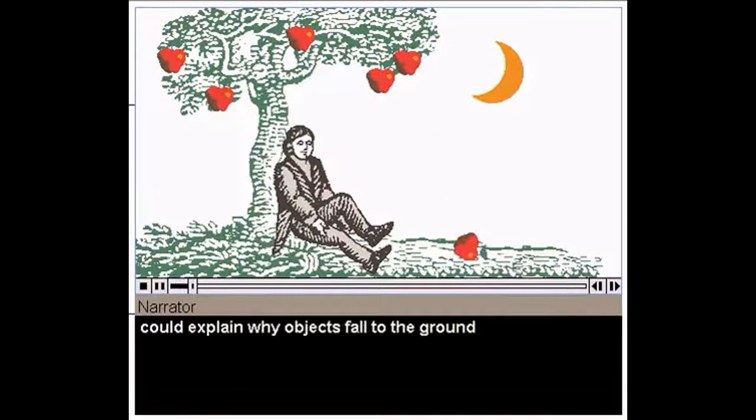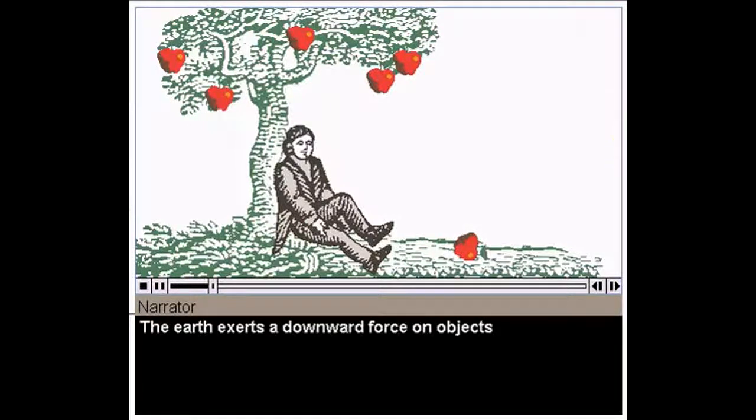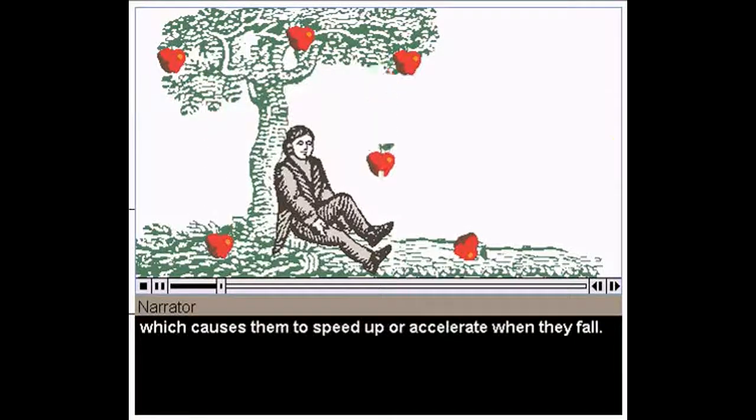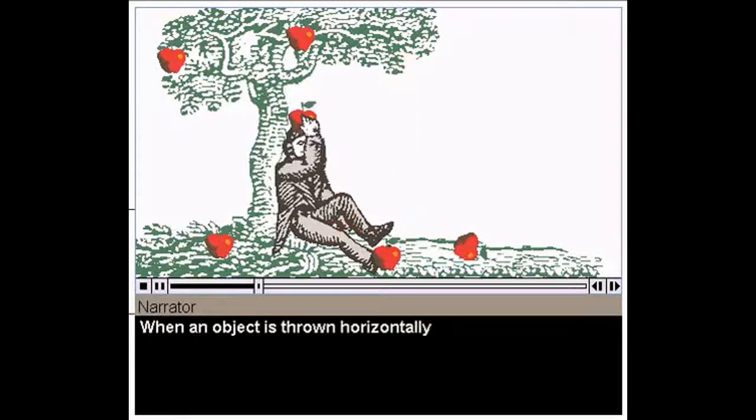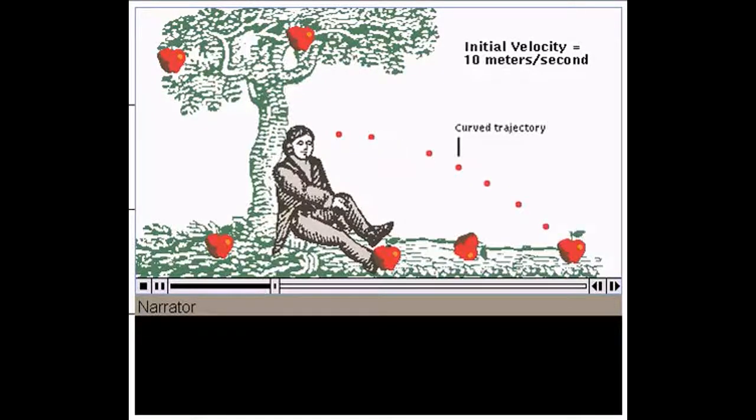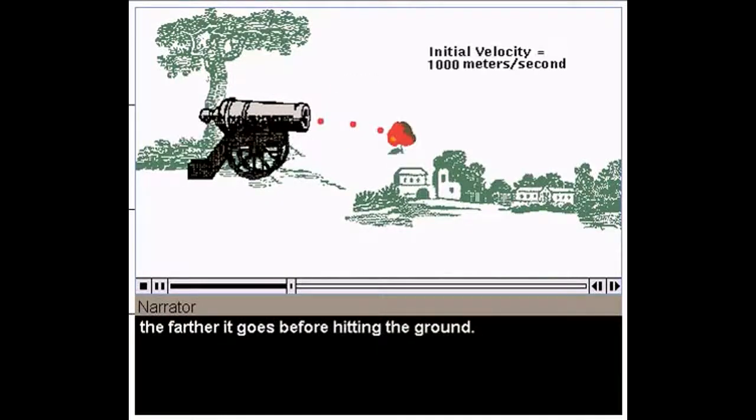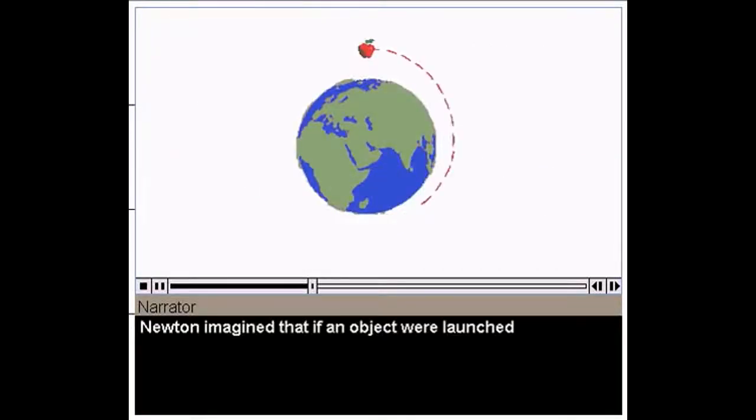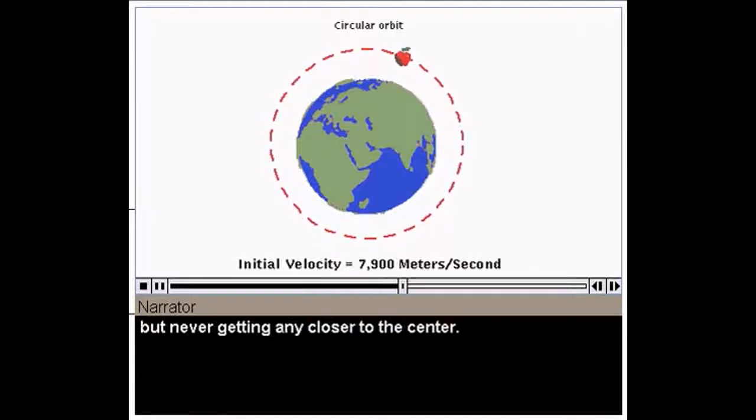Isaac Newton believed that a single idea could explain why objects fall to the ground and why the Moon goes around the Earth. The Earth exerts a downward force on objects which causes them to speed up or accelerate when they fall. When an object is thrown horizontally, it experiences the same force and accelerates downward at the same rate as when it falls straight down. The faster the object is thrown, the farther it goes before hitting the ground. Newton imagined that if an object were launched with a very high speed, it would curve far around the surface of the Earth. With precisely the right velocity, an object would go into a circular orbit, continually falling toward the center of the Earth, but never getting any closer to the center.